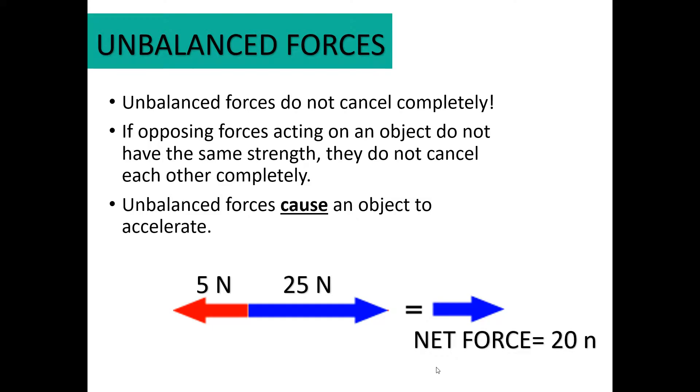And unbalanced forces are going to actually cause an object to accelerate or change its motion. So we have opposing forces again, but this time they're different. So we have a force that's pulling to the right with a force of 25 Newtons, and then a force of 5 Newtons pulling to the left. So in order to find net force, we're going to subtract those two values. And so 25 minus 5 gives us a net force of 20. Now, if I want to describe the direction of motion, objects move in the direction of their greater net force. So since the 25 Newtons is higher than the 5 Newtons, the object's going to move in favor of that force. So I would say this object has a net force of 20 Newtons, and this object is going to move to the right.